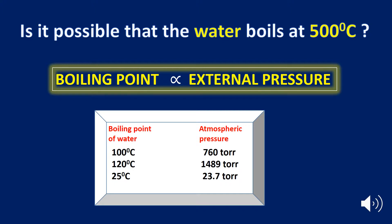Here, the boiling point of water is 100 degree Celsius at an atmospheric pressure of 760 torr, and with the increase of the atmospheric pressure, the boiling point increases.